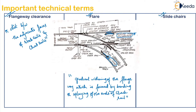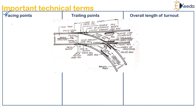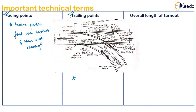Next is slide chairs — these are chairs provided to support the tongue rails. For lateral sliding of the wheel, slide chairs or slide plates are used. Next are facing points: if a train passes first over switches and then over crossing, it is called facing points. If it is the other way — moving from the branch to the main line — they are called trailing points.